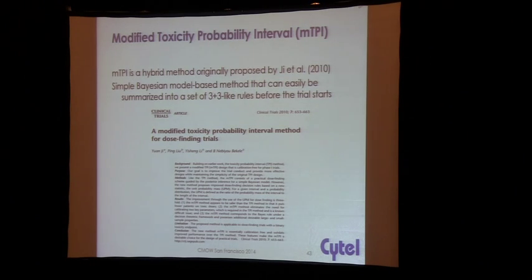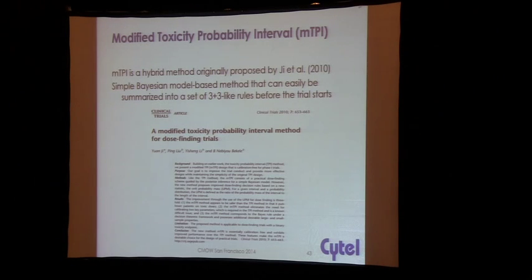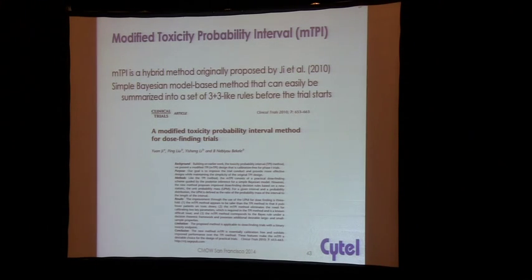The mTPI is Bayesian at its core, but it models each dose individually — it's not borrowing information between doses. Because it's a simpler model, you can actually summarize all the possible decisions after you see a cohort ahead of time. This is actually a design used at Merck in almost all their Phase 1 oncology trials.